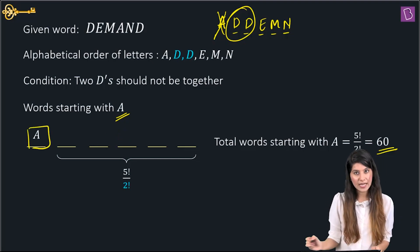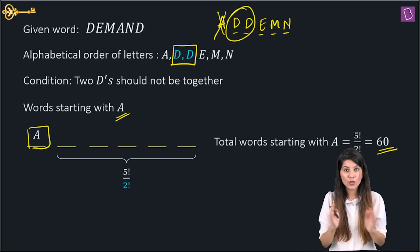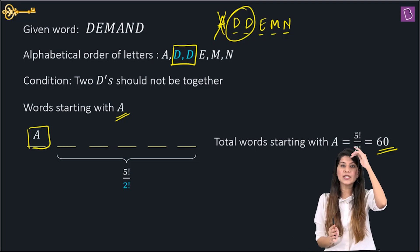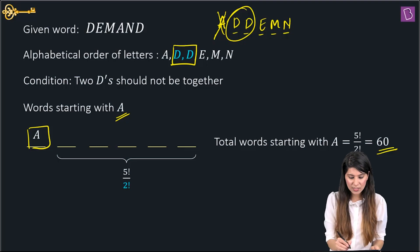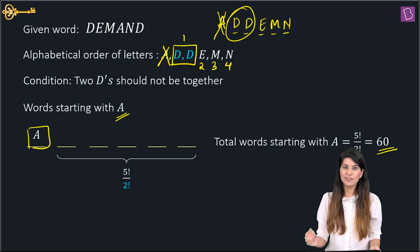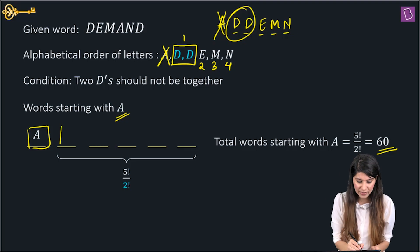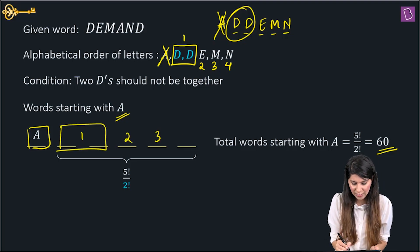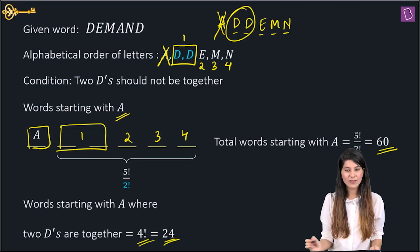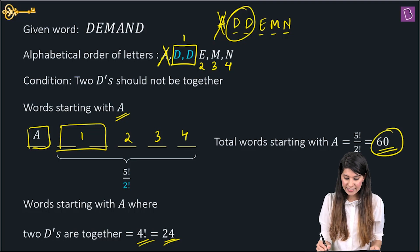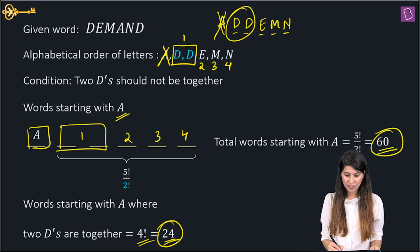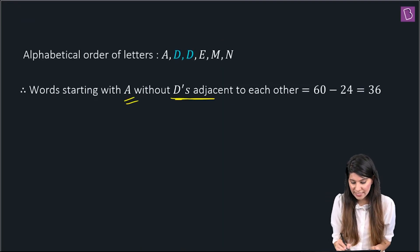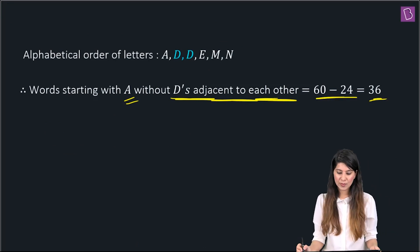With A fixed and two D's treated as one unit, we have 4 units total, arrangeable in 4! = 24 ways. So words starting with A but having no two D's together = 60 − 24 = 36.